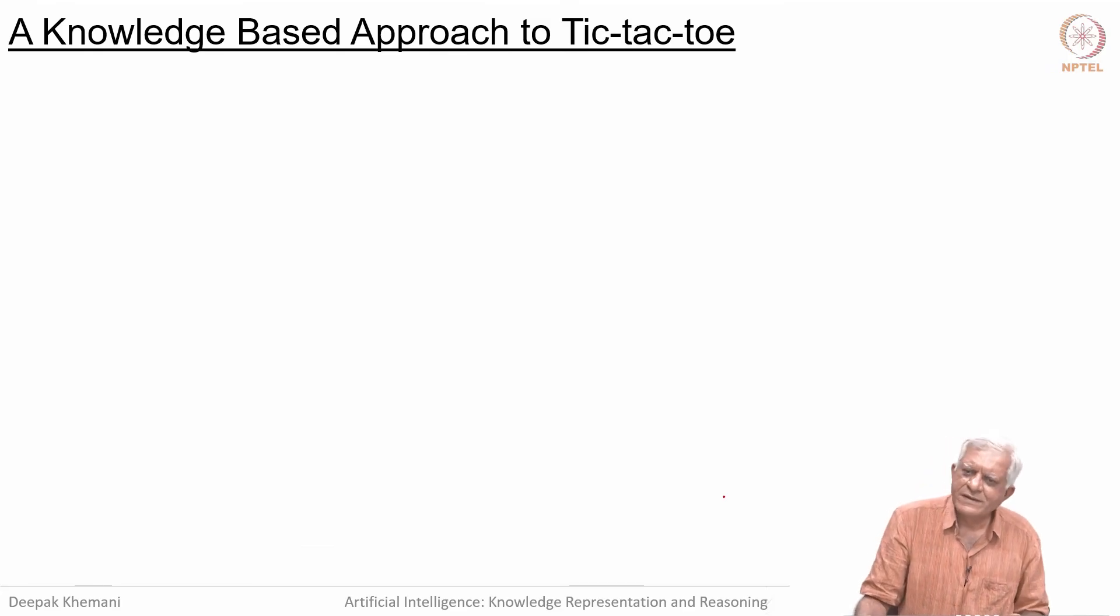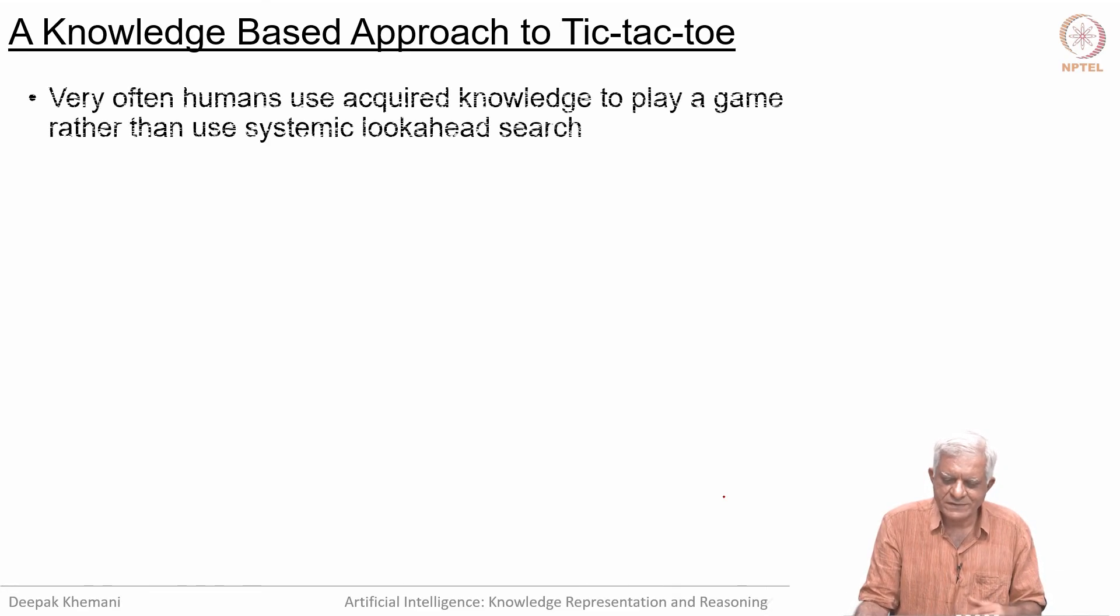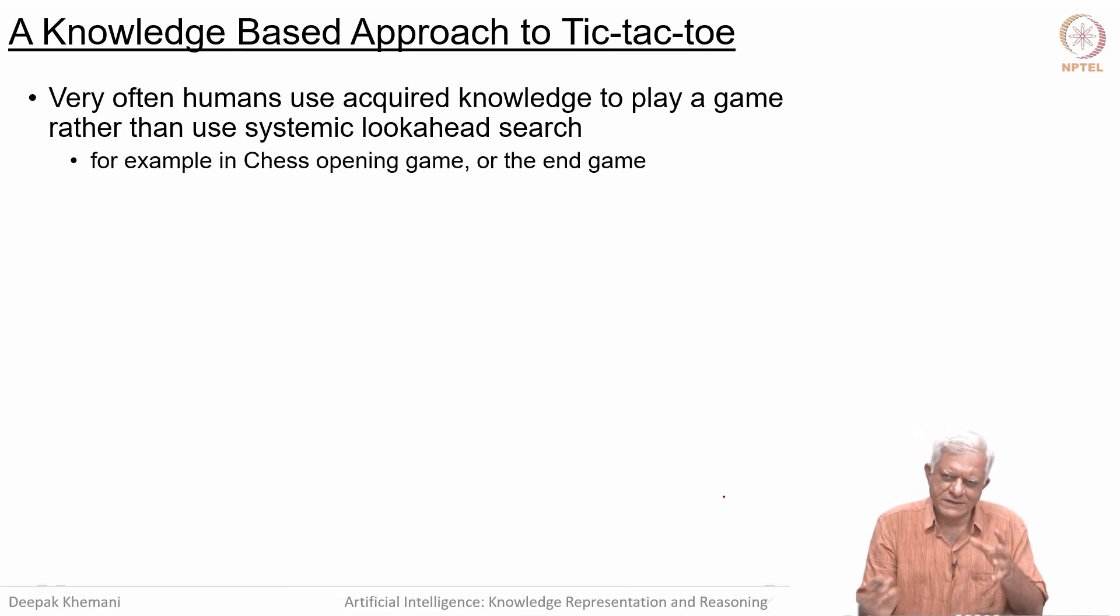But humans do not always play games using search. Here is an incitement for you to write a program to play the game of tic-tac-toe, also called cross and noughts. It is a knowledge-based approach that uses rules—write rules to play the game instead of searching ahead and trying to find the best move. Humans use acquired knowledge to play a game rather than systematic look-ahead search. For example, the chess opening game or the end game—the programs do not really do search. Humans very rarely do search. In fact, it was said about the game of Go that Go is hard for machines to play because machines use search, whereas Go players, the Go masters, they use perception, which is a kind of knowledge.